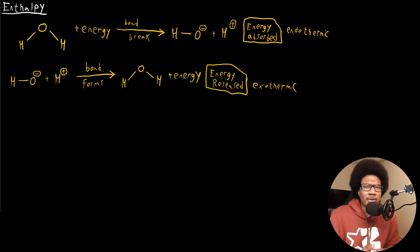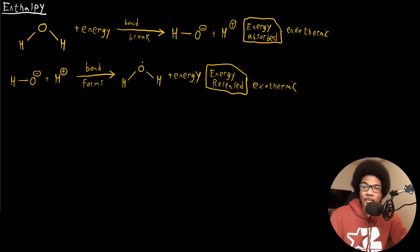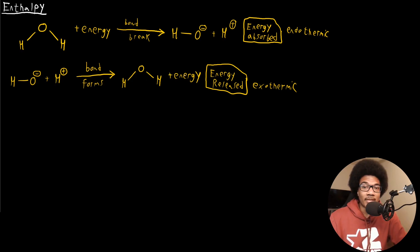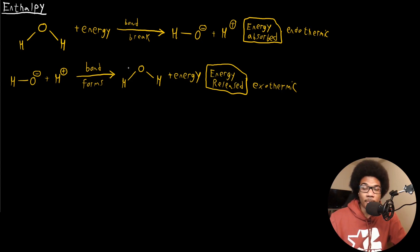Almost every chemical reaction you can think of involves some sort of cascade of breaking and forming bonds. There's an interplay between bonds being broken and bonds being formed in traditional chemical reactions. On the contrary, if these ions come back together to form the water molecule — if a bond is formed — that's going to release energy. That's an exothermic process. Usually this energy is released in the form of heat, and typically the energy required to break bonds is also heat.